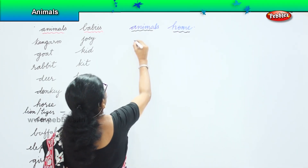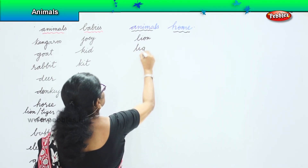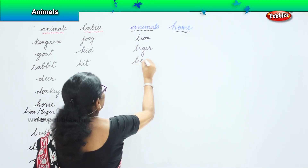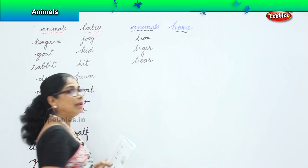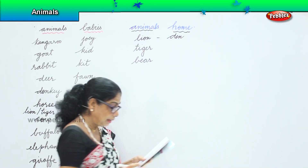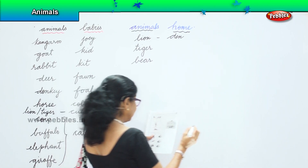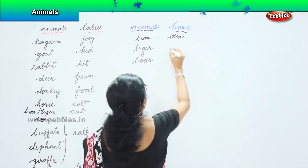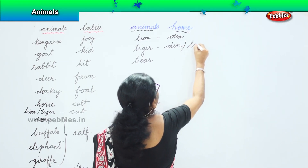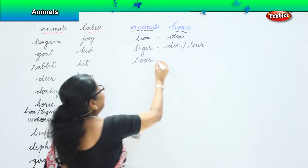Let's look at where the lion lives. The lion lives in a den. A tiger also lives in a den, and its home is also called a lair. A bear normally lives in a den too.